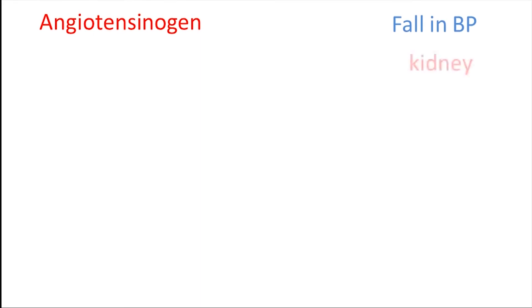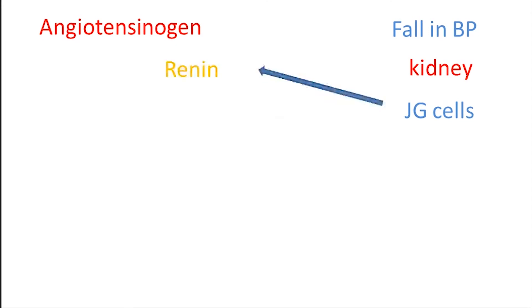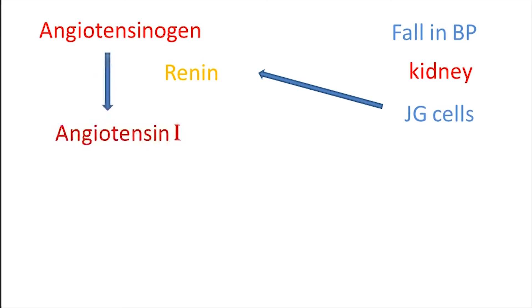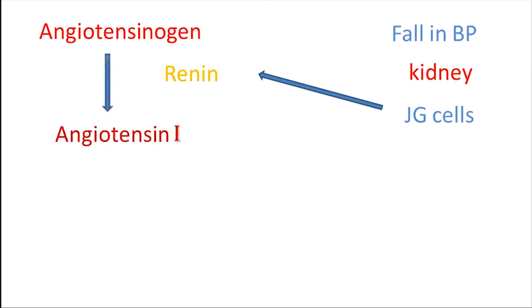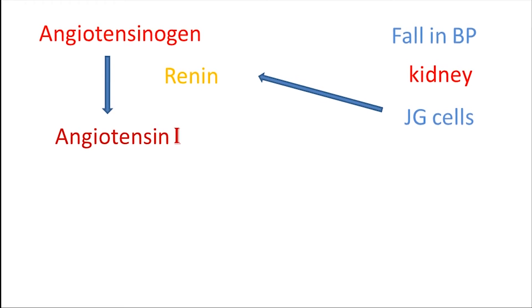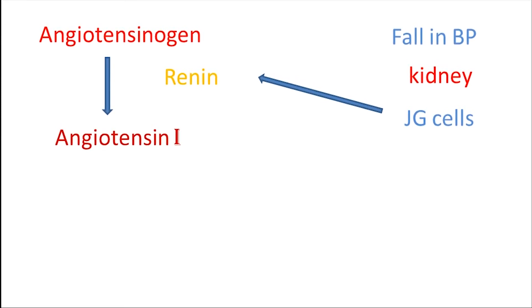Whenever there is a fall in blood pressure, the kidney detects it by low sodium and low glomerular efferent pressure. The juxtaglomerular cells of the kidney secrete renin. This renin converts the circulating angiotensinogen into angiotensin I, a decapeptide.